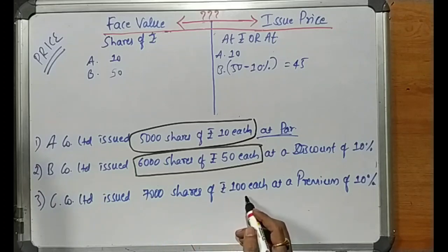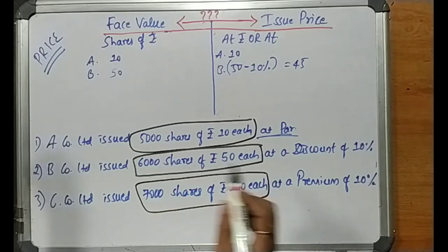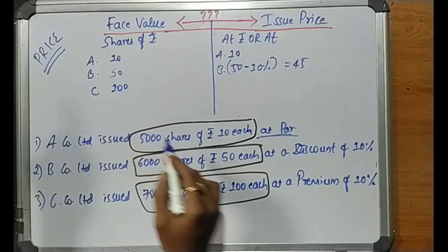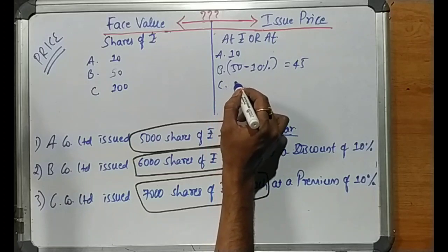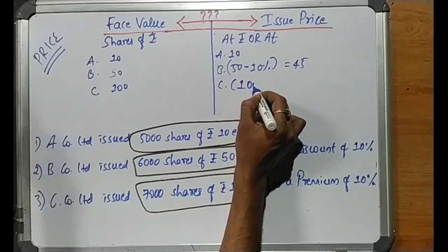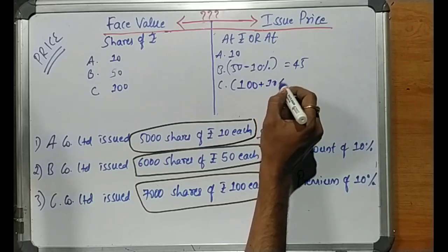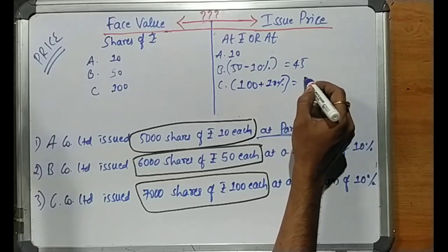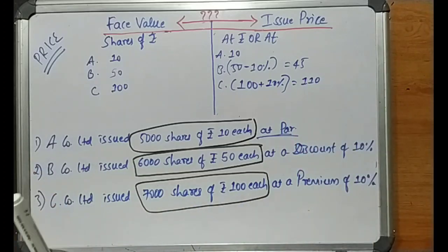Last case: C Company Limited issued 7000 shares of rupees 100 each. Breaking the sentence — rupees 100 is the face value. These shares are issued at a premium of 10%. For discount we subtract; for premium we add. So face value 100 plus 10% of 100 = 10 rupees. Therefore issue price is 110 rupees per share.